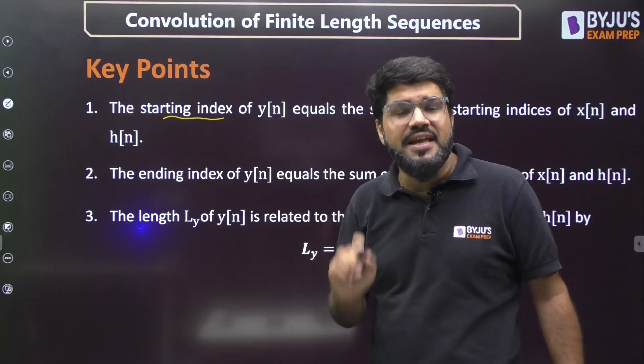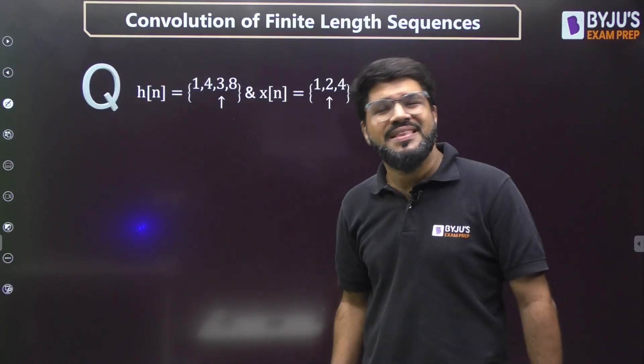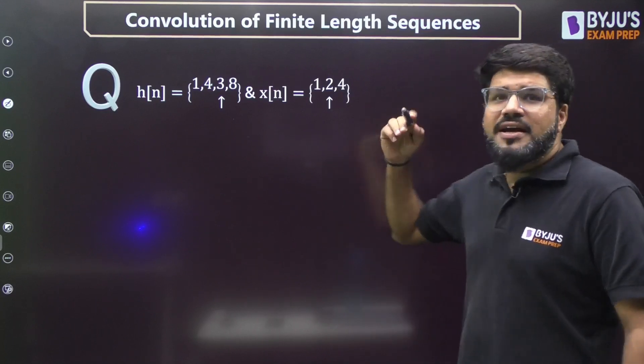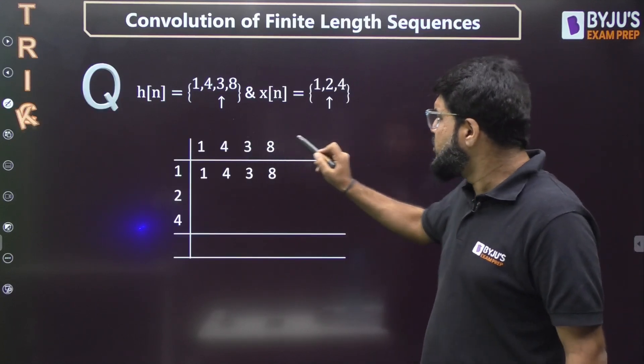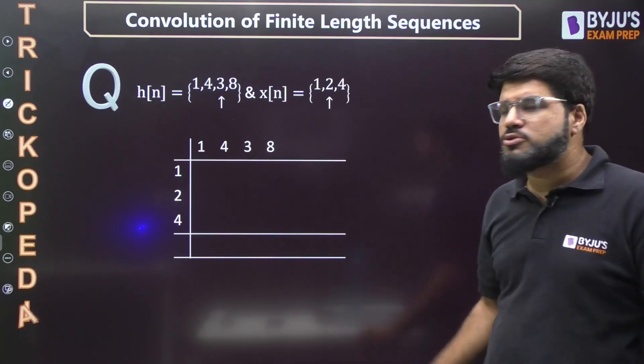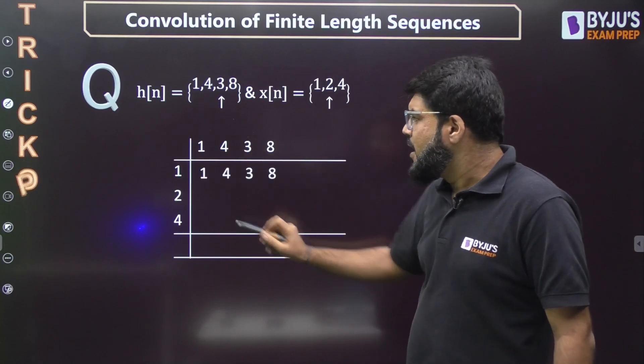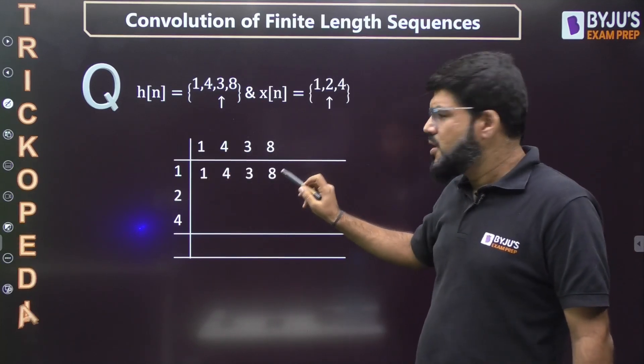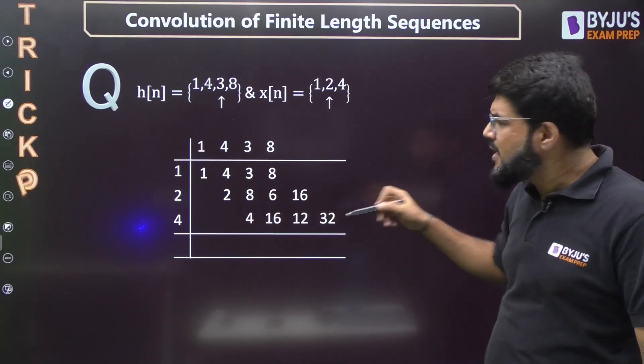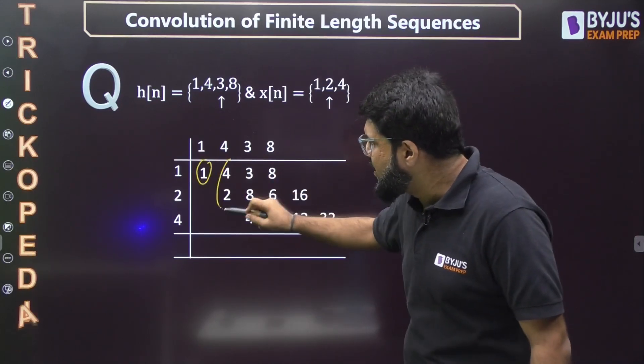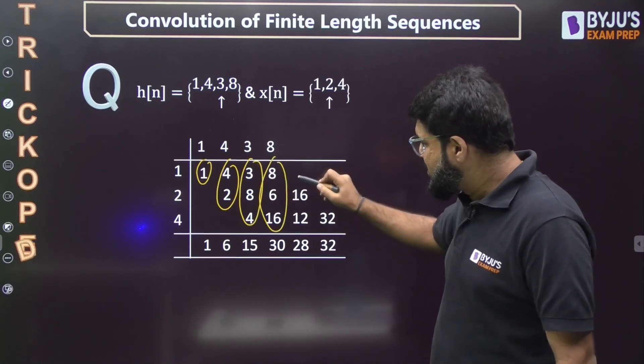If the given signals are not starting from origin, it is very simple. The calculation method is the same. Let me write down: 1, 4, 3, 8 and 1, 2, 4 on the border. Multiply by 1 on the top: 1, 4, 3, 8. Multiply by 2: 2, 8, 6, 16. Similarly multiply by 4, then do sum by column.